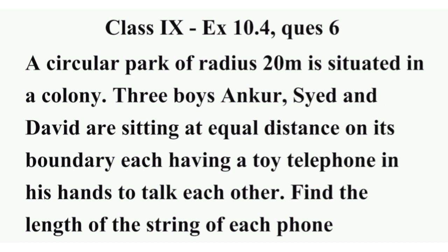Lekin equal distance mein baithe hain. Jitne door mein Ankur se Sayyad hai, utne hi door mein Sayyad se David hai. Aur Sayyad, Ankur aur David ka distance bhi same hai. Iske baad question mein bola ja raha hai ki yeh teen log ek game khel rahe hain. Teen logo ke paas ek khilona wala telephone hai, jo tar se connected hai — wire se connected hai.